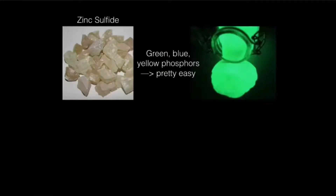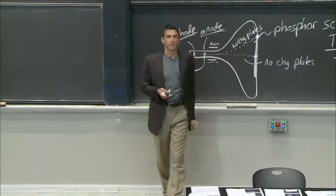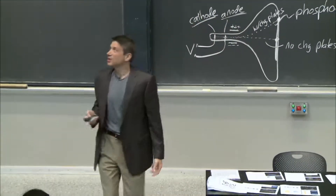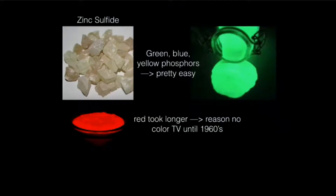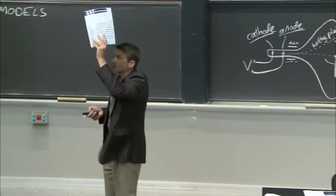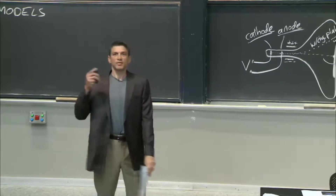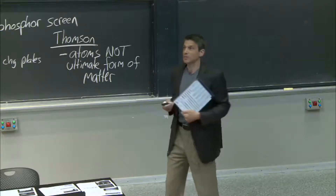A side note: when TVs first came along, green was pretty easy. There were a lot of chemistries used for the screen — you put a different chemistry here and it lights up differently when electrons hit it. Why? Wait until Wednesday. Green was easy, yellow was easy, red was hard. They couldn't get a good red, and that's essentially the reason there were no color TVs until the 1960s. The answer was a phosphor that worked: yttrium orthovanidate with a little bit of europium added to it. Just a little bit of europium. Why did that work? We need to understand how electrons interact with matter, which is where we're going.